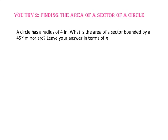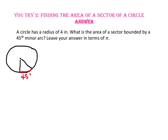Pause the video and do U-try number 2. A circle has a radius of 4 inches. What is the area of a sector bounded by a 45-degree minor arc? Leave your answer in terms of pi. Since the sector is 45 degrees out of 360 degrees, it is one-eighth of the circle.